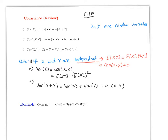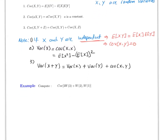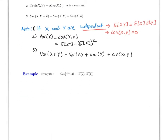Let's do a couple of examples using these formulas incorporating Brownian motion. Here Wt is the Wiener process or the standard Brownian motion. The question is asking you to compute the covariance.